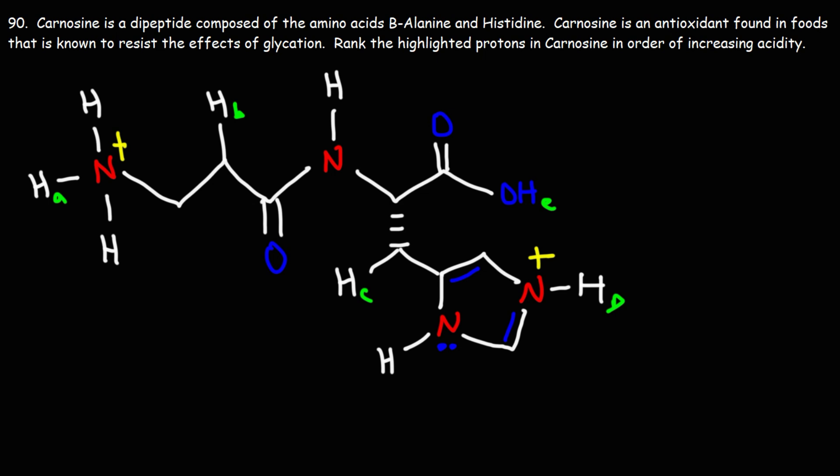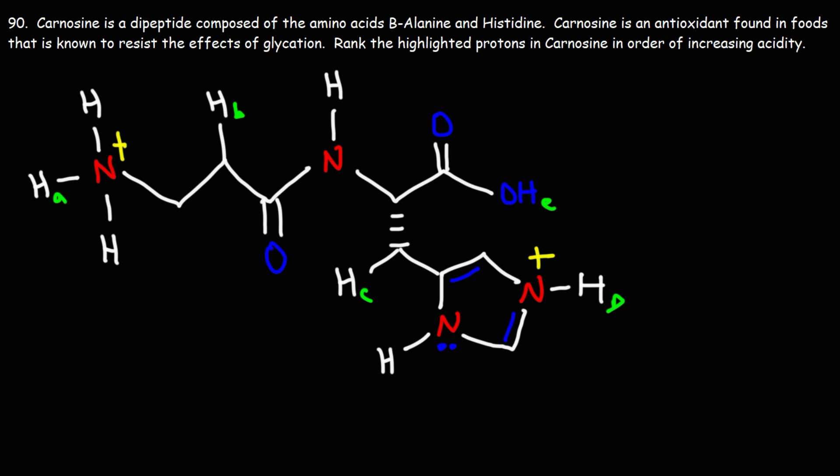What I like to do in these problems is label the pKa values, or at least an approximate range of the pKa values, which makes it easier to rank them. Here we have a carboxylic acid. A regular carboxylic acid with no special groups attached to it has a pKa of around four to five.